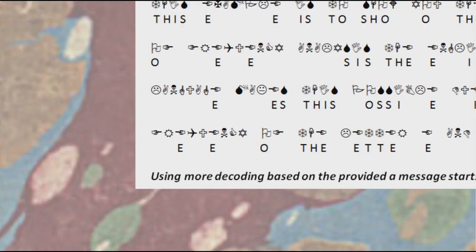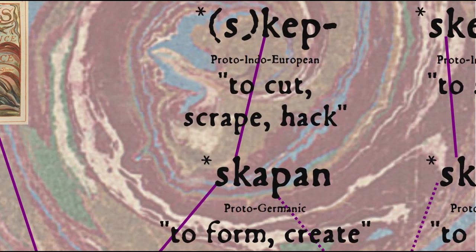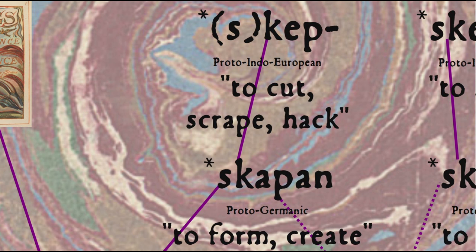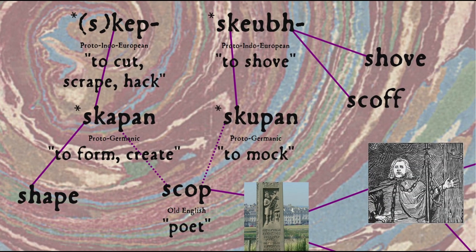Now let's take a look at those early oral poets for a moment. One of the Old English words for oral poet is shope, which may come from Proto-Germanic skapan, to form or create, from Proto-Indo-European skep, to cut, scrape, or hack, which would make it cognate with the word shape — thus a close equivalent of the word poet, from Greek poetes, literally a maker. It might also come from, or at least be influenced by, Proto-Germanic skupan, to mock, which itself might come from Proto-Indo-European skewb, to shove, root of the words shove and scoff.